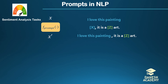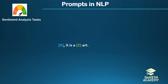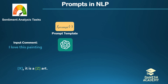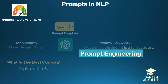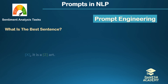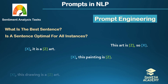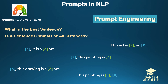Now the modified input X' is fed to the foundation model to generate an output, such as 'fantastic.' When the answer is correctly placed, the task is complete. Designing the appropriate prompt template allows the foundation model to map input comments to specific sentiment categories. In this procedure, choosing the right context slot is crucial — even a small change in the context can significantly impact performance. Deciding which words or sentences to use in the context for a specific downstream task requires expertise and falls under the domain of prompt engineering. Questions like 'What is the best sentence?' or 'Is a sentence optimal for all instances?' need to be addressed in prompting foundation models.